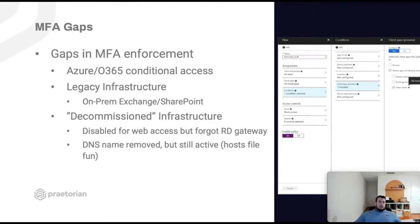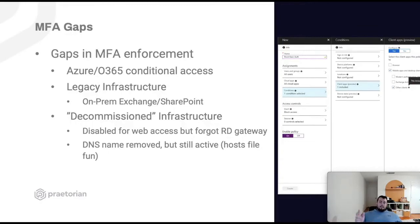Gaps in MFA: if they've got really good MFA everywhere, just try to find the holes — especially when it comes to conditional access policies. Sometimes it has to do with EWS and legacy protocols that aren't being disabled because some weird application needs them. Or legacy on-prem infrastructure they think is shut down but isn't — those on-prem Exchange servers, on-prem SharePoint services that are just hanging out there.